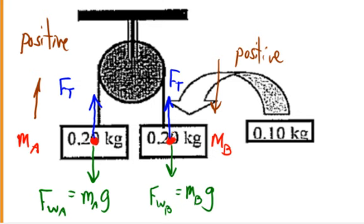Now, let me caution you against saying that the tension in the string is going to be 3 newtons — equal to the weight of mass B. That is not true, because if it were true, then mass B would not accelerate at all, because the upward force of the tension, 3 newtons, would equal the downward force of the weight, 3 newtons. If that were the case, there would be no acceleration. In fact, the system does accelerate, so the string tension has got to be something less than 3 newtons.